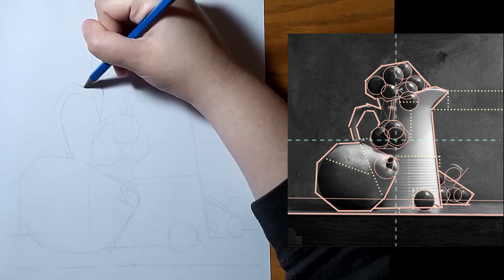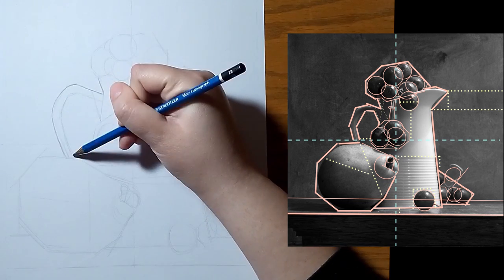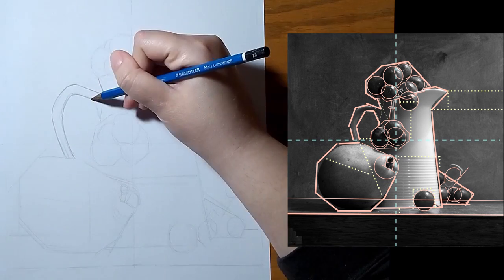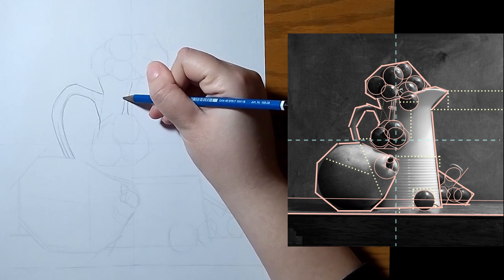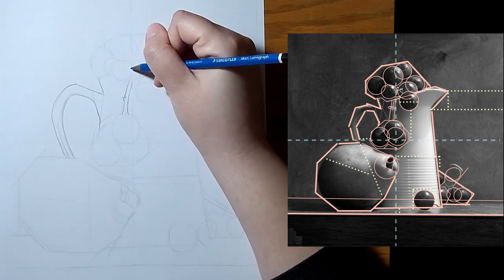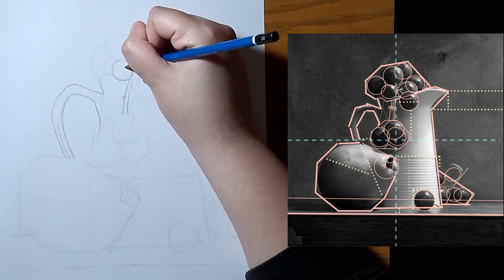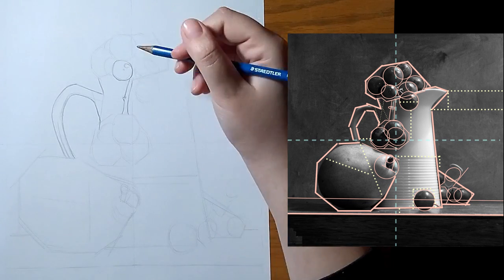When our sketch is ready, we can start looking at our objects. Here we soften our edges, and we pay more attention to the outlines. Here, our sketch is going to start looking like our picture. Take as long as you need here.